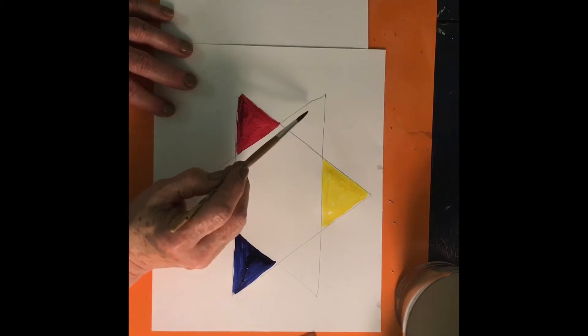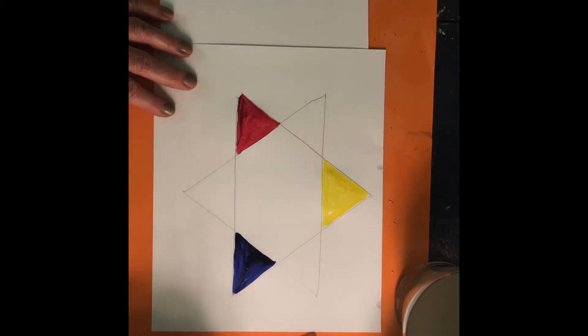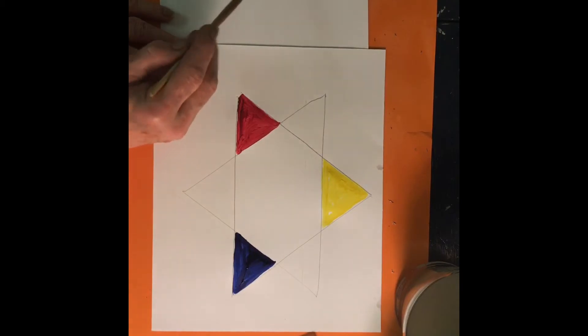Next, we're going to be painting the secondary colors. And you call them secondary colors, because you take the primary colors, and you mix two of them together, and it makes another color.